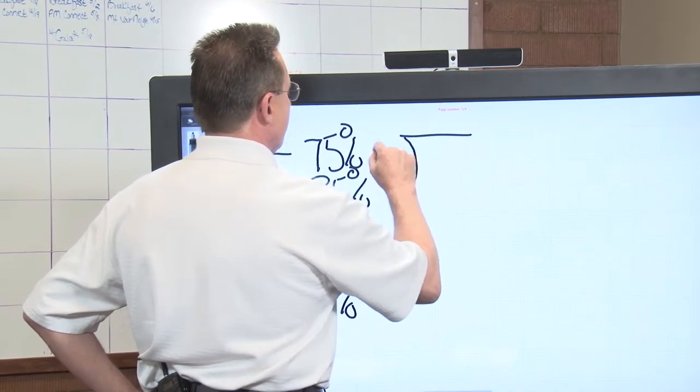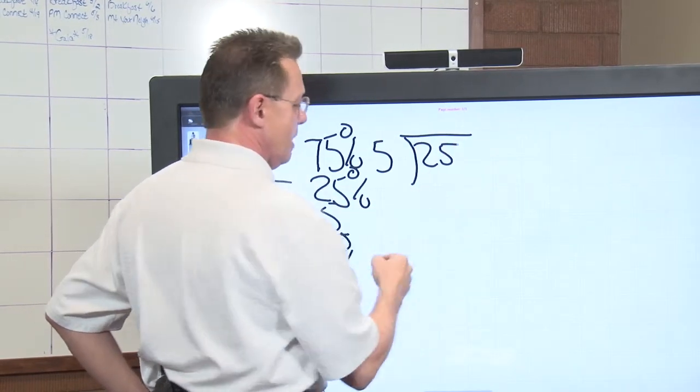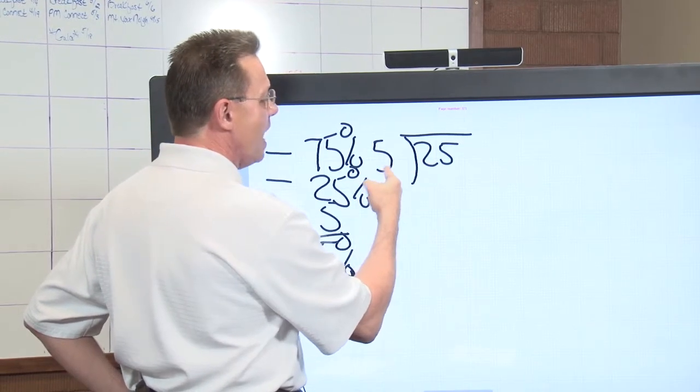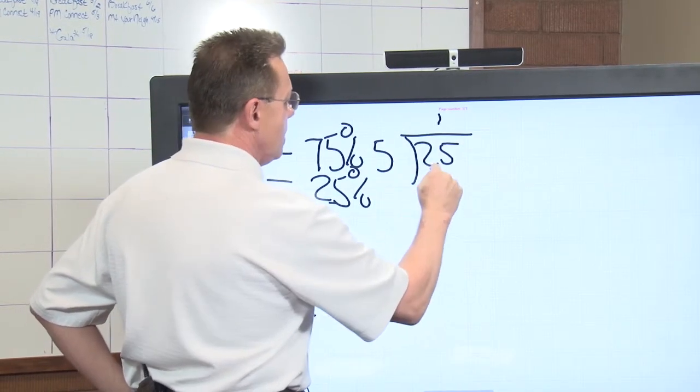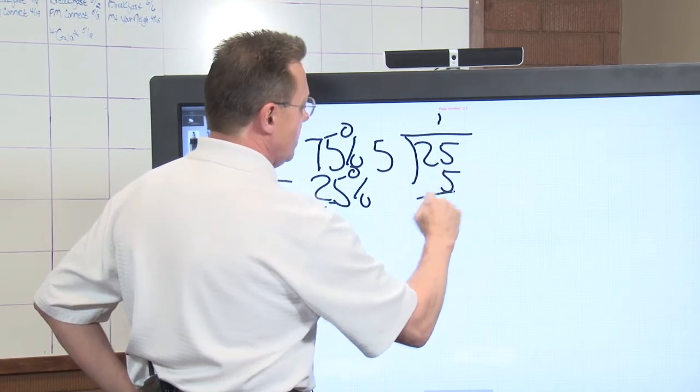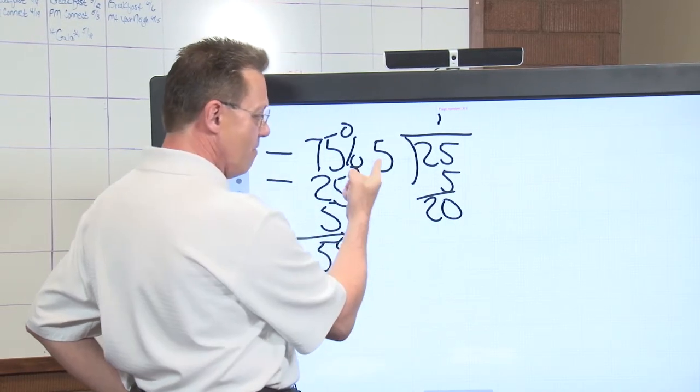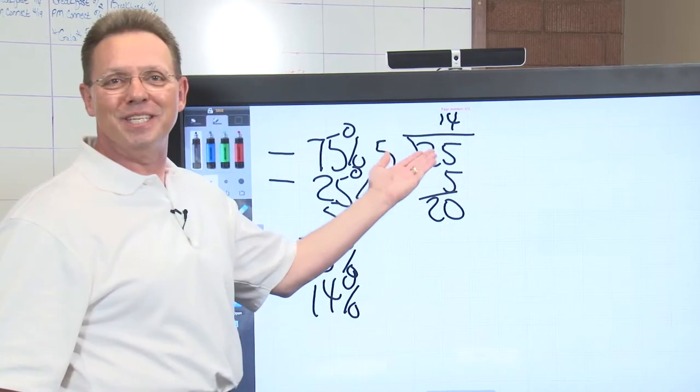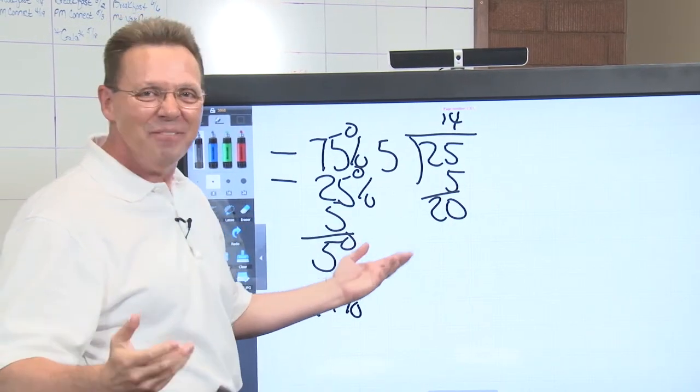He took five into 25 and he said, you can't divide five into two, but you can divide five into five one time. Then one times five is five, which equals 20. And five into 20 equals 14. They should get 14%. And I was like, that can't be right.